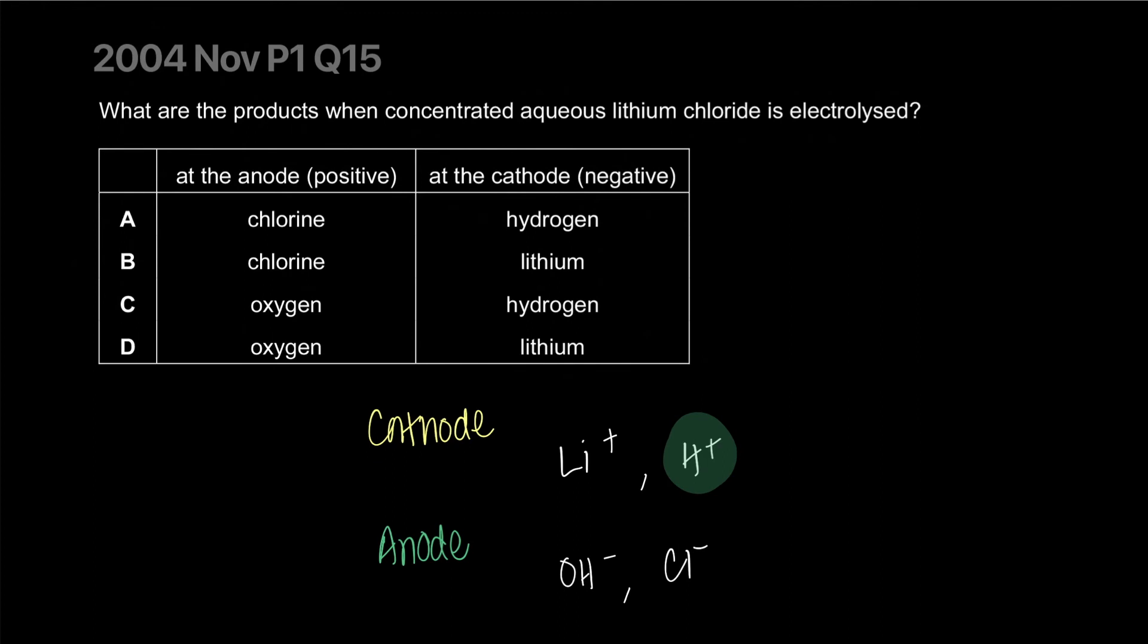What's going to happen at the anode? Normally in dilute solution hydroxide ion will discharge because it's lower in the ease of discharge of anions. But it's concentrated. When it's concentrated, the anion in higher concentration will discharge. Over here, that is the chloride ion. At the positive electrode, you'll have chlorine. At the negative electrode, hydrogen will come up. The correct answer is A.